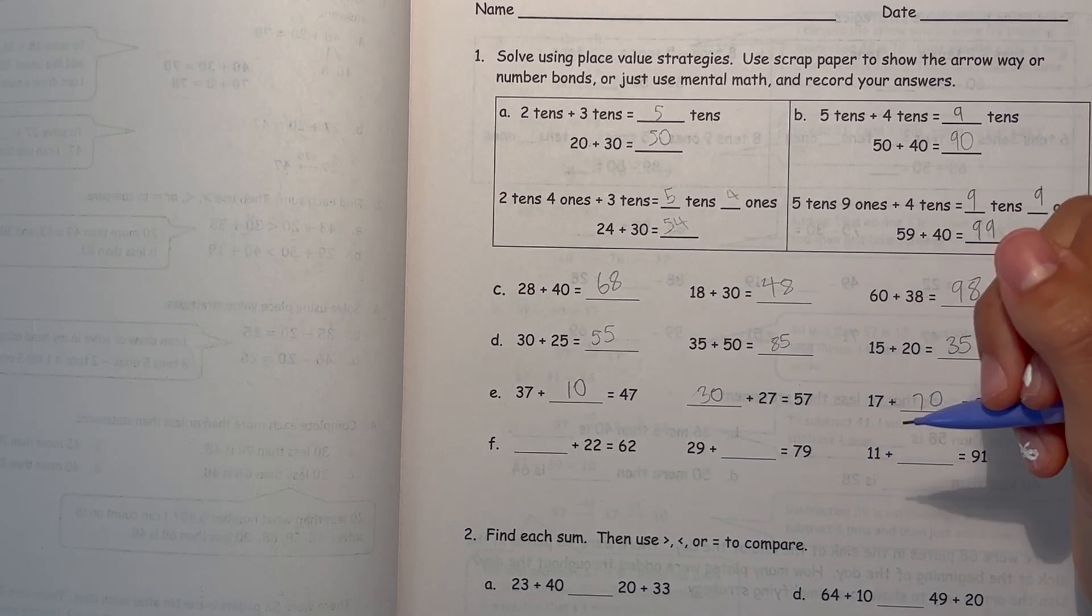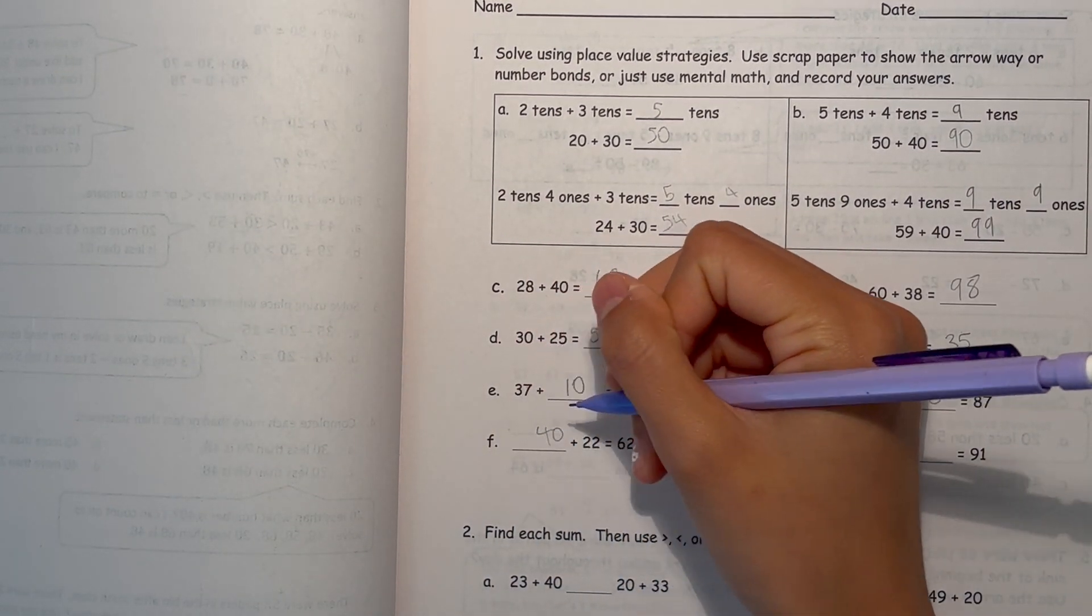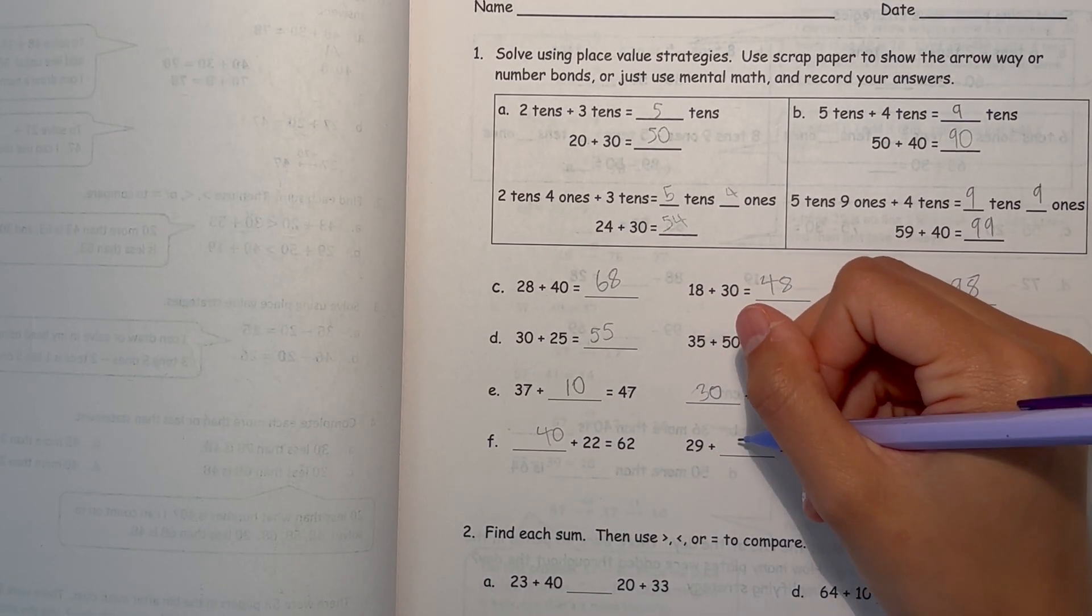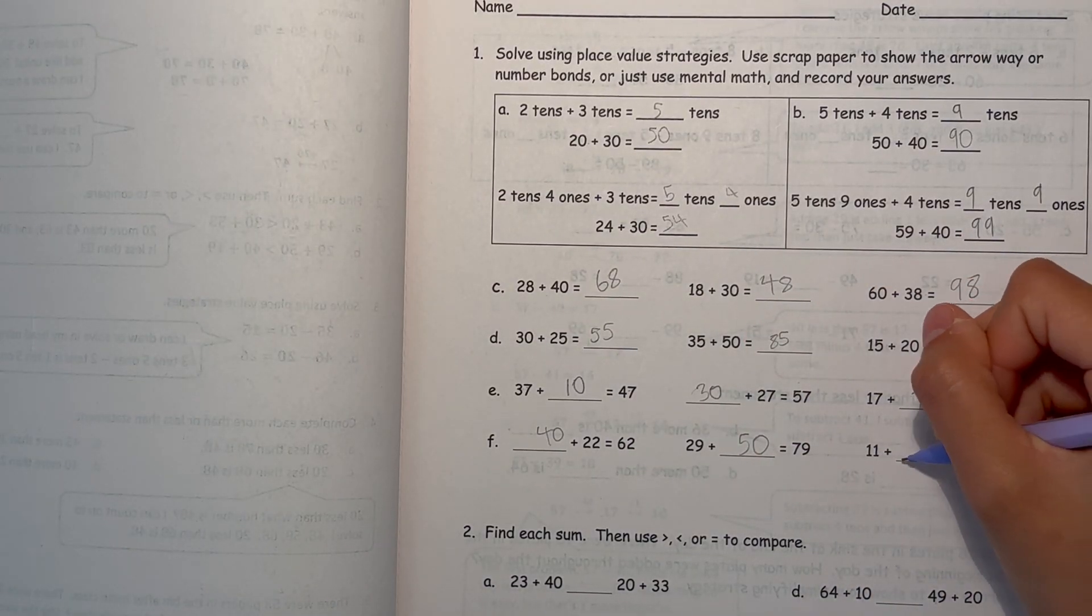Alright, and now for F. Here it's 40 plus 22 is 62. 29 plus 50 is 79. And 11 plus 80 is 91.